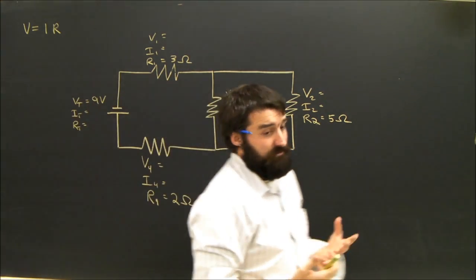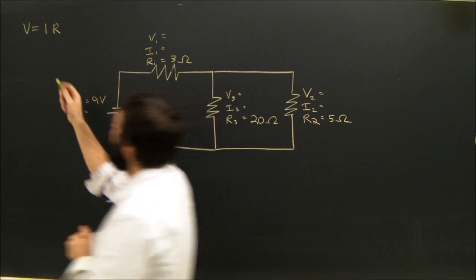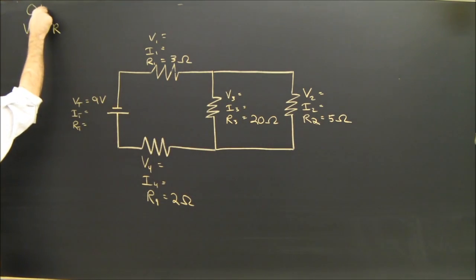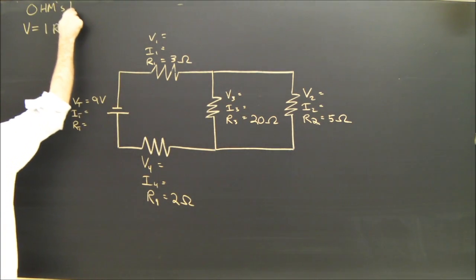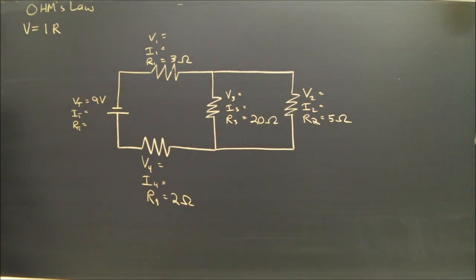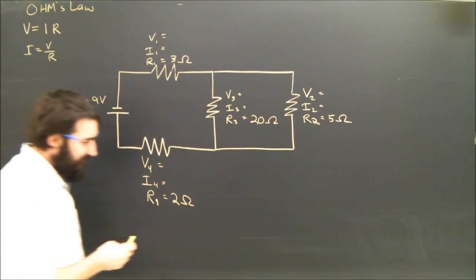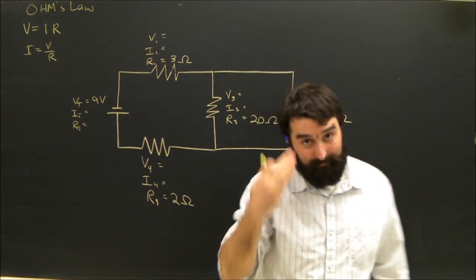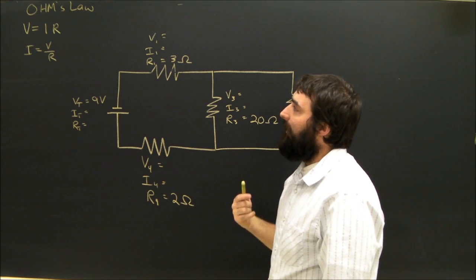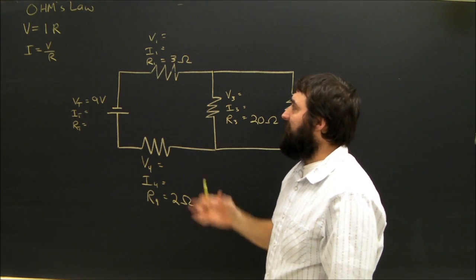The only new piece of information that we're going to use here, which hopefully isn't new for you, is Ohm's Law. Which, of course, is V equals IR. It's usually written that way. I think for historical reasons, I equals V over R is maybe a better way to think about it. Regardless, we're going to use that several times.